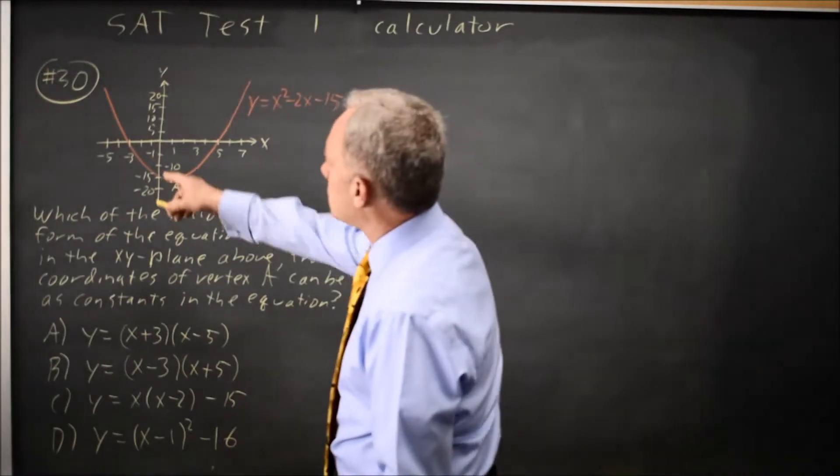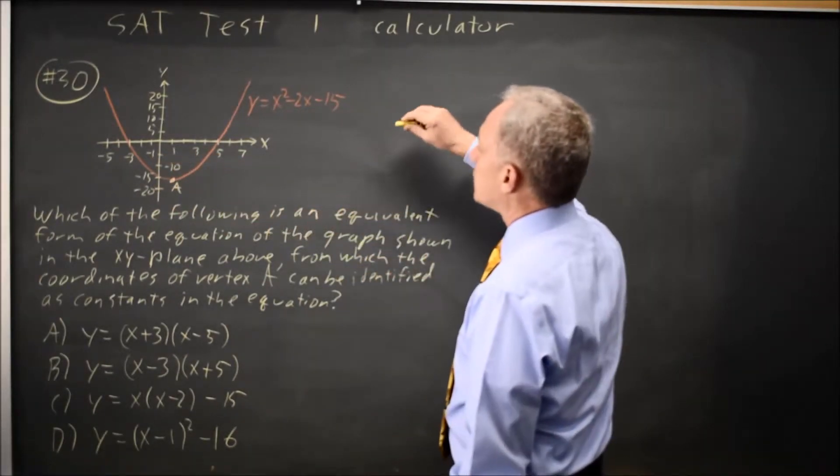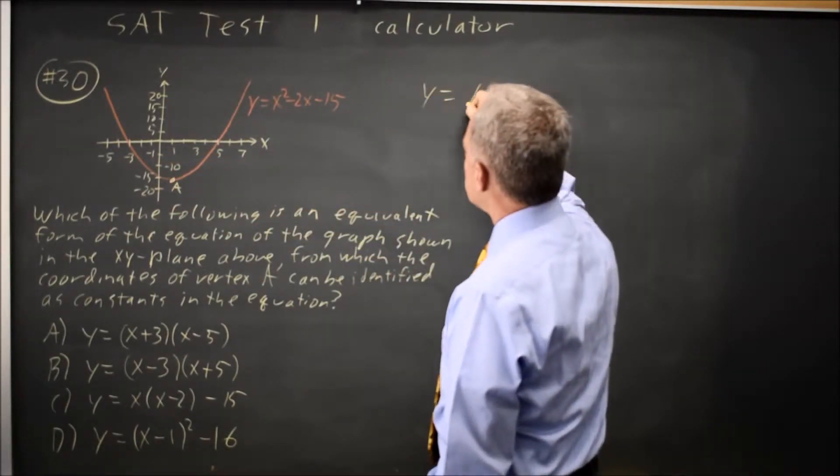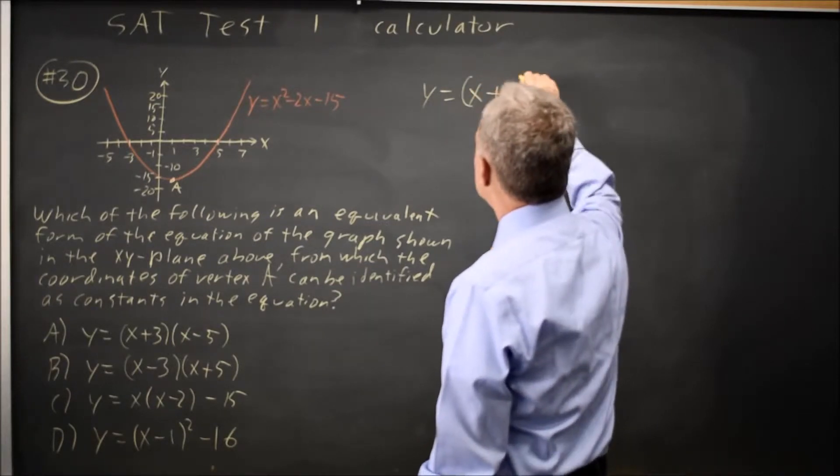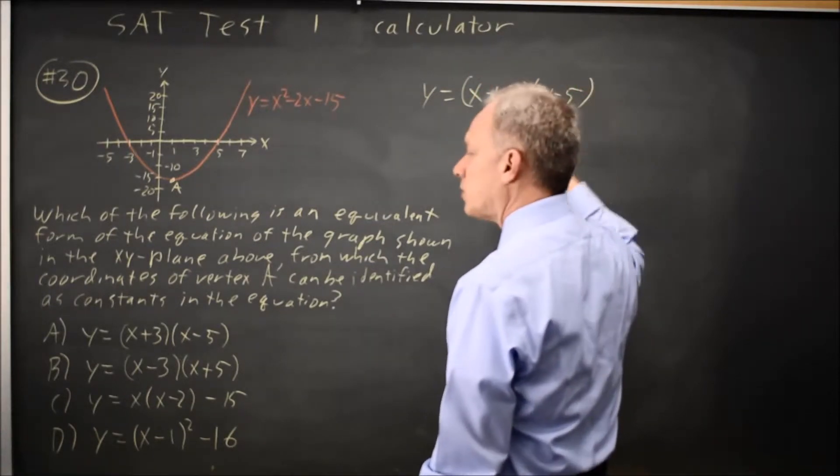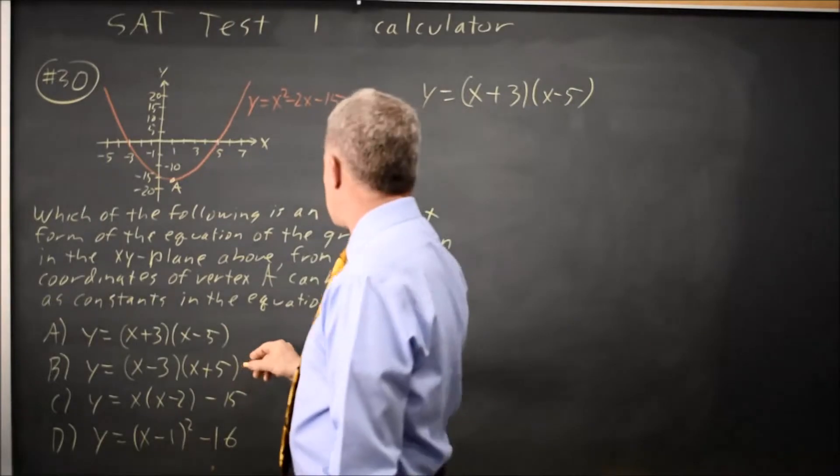We're tempted to say, oh, we have zeros at negative 3 and 5, so that's y equals x minus negative 3, x minus 5, which is choice A.